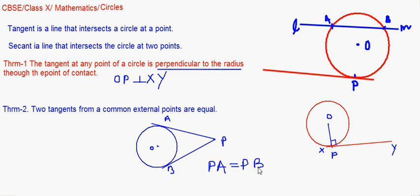One which is intersecting here and the one below. I give the name to the point of tangency, maybe A and B. So this PA is said to be equal to PB. These are the two basic theorems under circle.